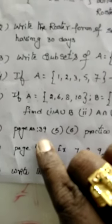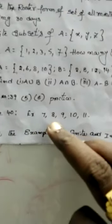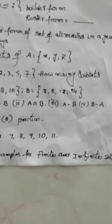See page number 39, fifth problem and sixth problem, practice at home. Next, page number 40, examples 7, 8, 9, 10, 11. Write the examples of finite and infinite sets. So finite key, infinite key, such examples write.